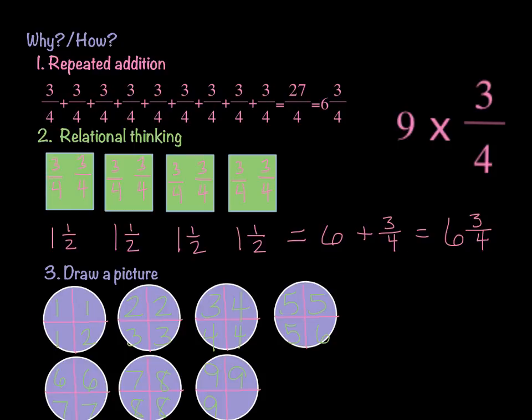And then we have 3 fourths left over, which is what you see here. So, my final answer would be 6 and 3 fourths. This is another way to think about these types of problems. Same problem here, I'm just looking at it and thinking about it in a different way. Did I get the same answer? Yes.